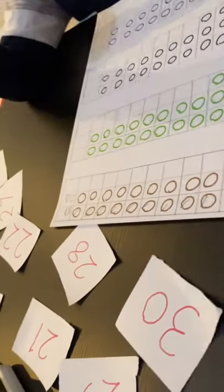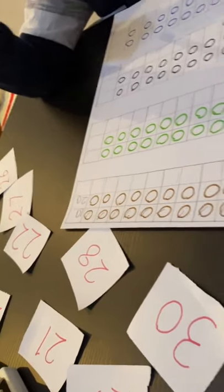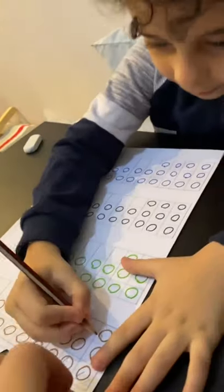What's coming after 20? This line is full, or only one circle? One circle, yeah. 21. Right here, 21.